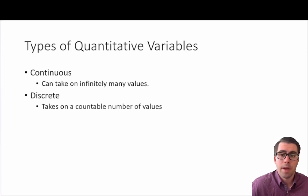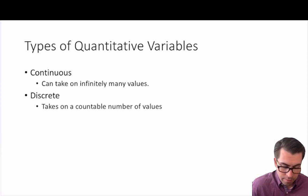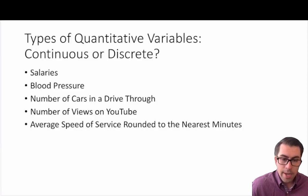Alternatively, we have discrete measures — when a variable takes on a countable number of values. For example, the number of patients in an emergency room: it's a countable number of values. We might have one, five, six, seven, or eight patients. Typically when we round to a whole digit we have a discrete value.